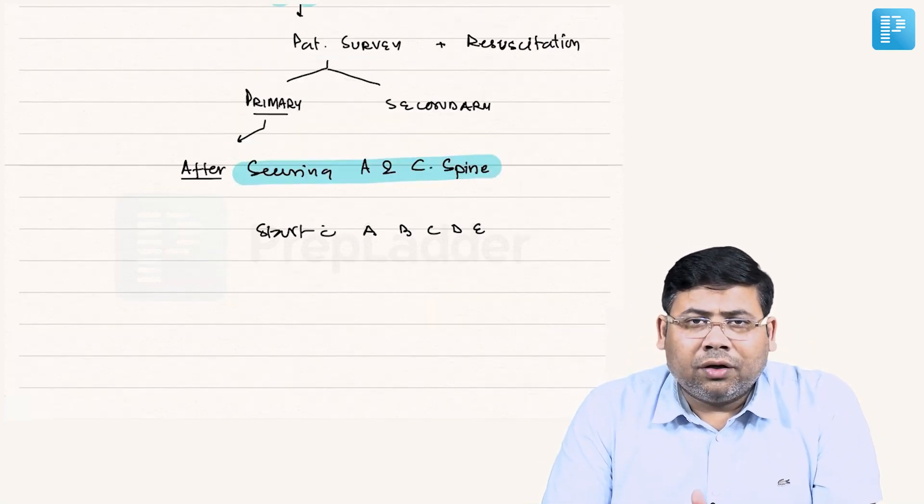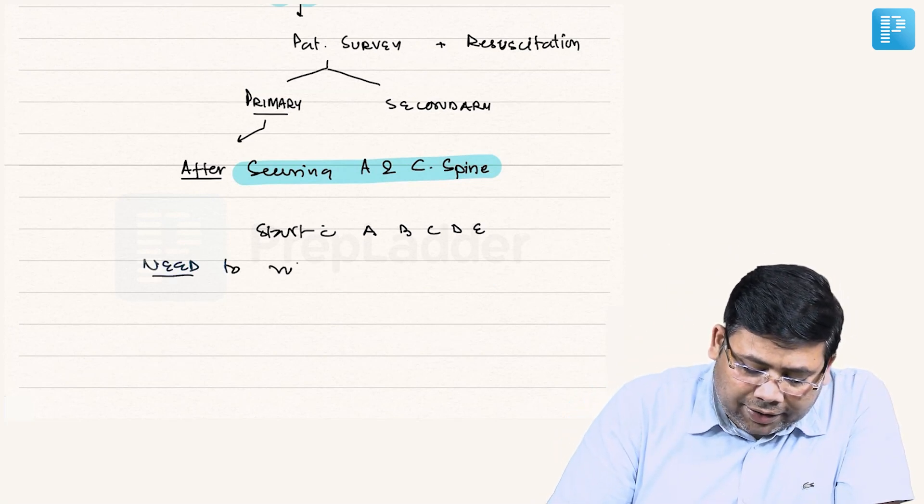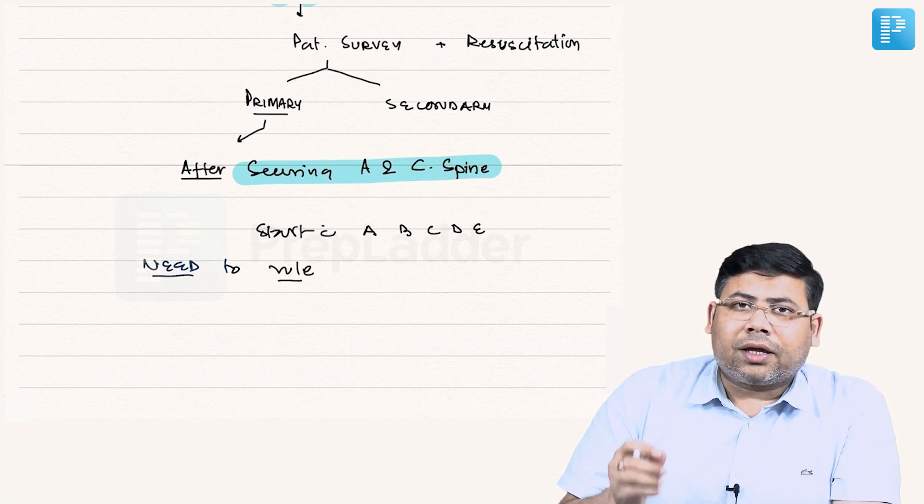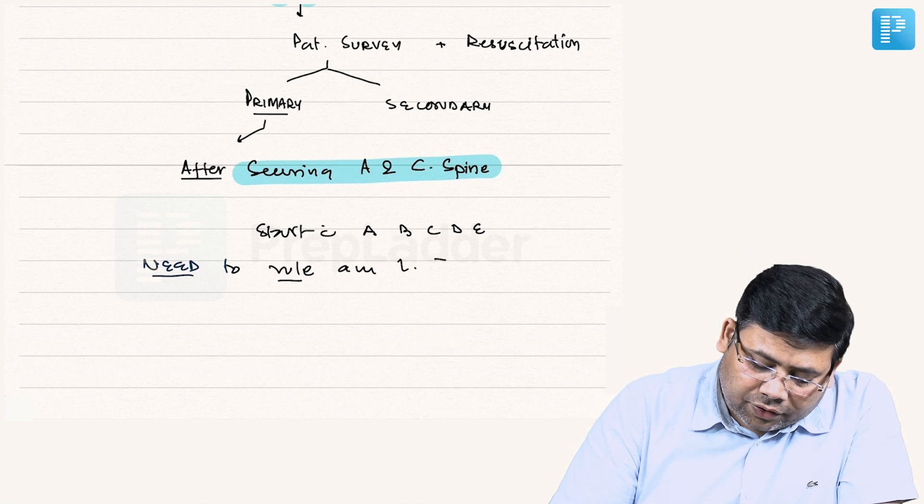Why are they important? The aim is to rule out any emergency condition which can be life-threatening, to rule out any life-threatening injury.